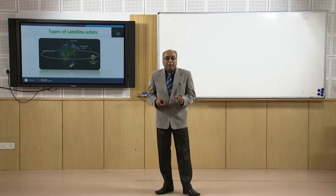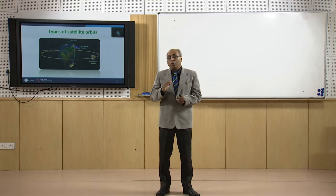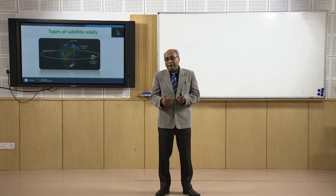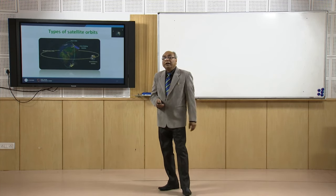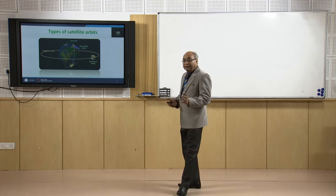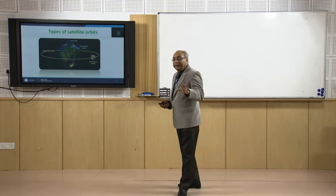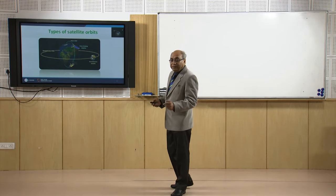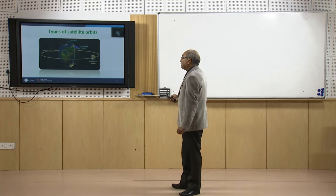Why is it called sun-synchronous? Because whenever the satellite passes over an area of the earth the local time will be the same. Suppose a satellite is designed to overpass over Roorkee at 9:30 — whenever it visits it will overpass at local time 9:30. It has been synchronized with the sun in that timing. So when we compare an image from 1980 and one from 1990, we know that if the season is the same the sun conditions will be the same as well because the time is the same. That is another advantage of sun-synchronous satellites.